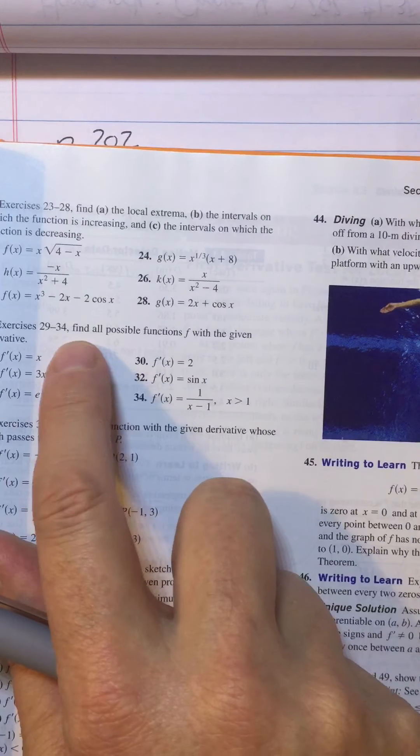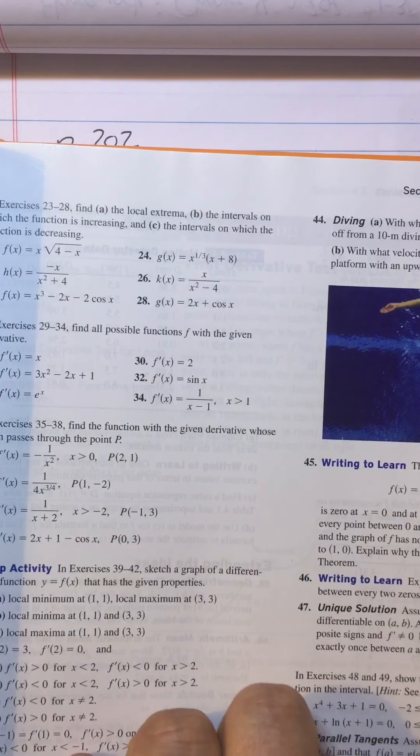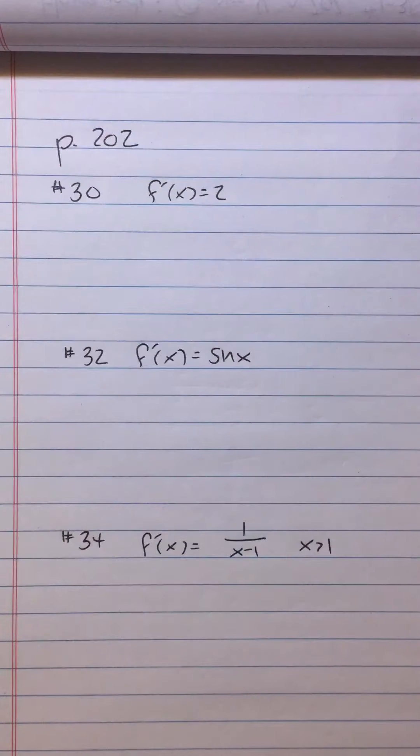Now, we have to think about what this means, all possible functions. There's more than one possible answer. How many possible answers to each one?